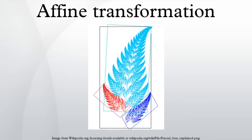A given transformation T may either be direct or indirect, and this may be determined by its effect on signed areas.